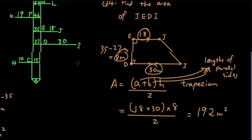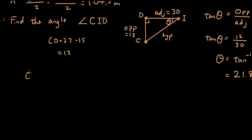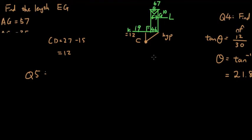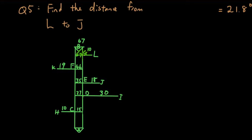Let's do one more question — question 5. Let's find the distance from L to J using Pythagoras. The distance from one point to the other is 10, and from this point to this point is 18. Let's write this out separately — we have 10 on one side and 18 on another, with a right angle.